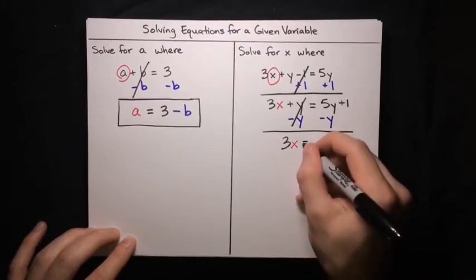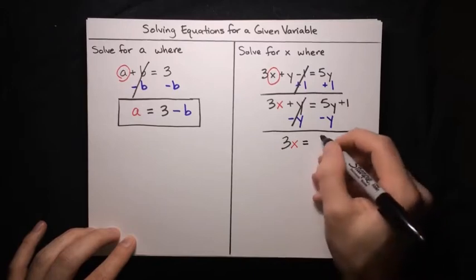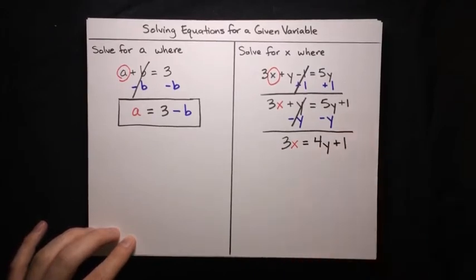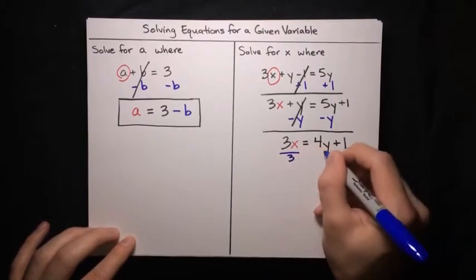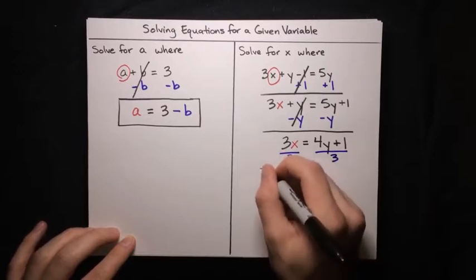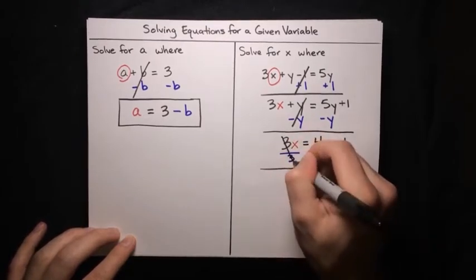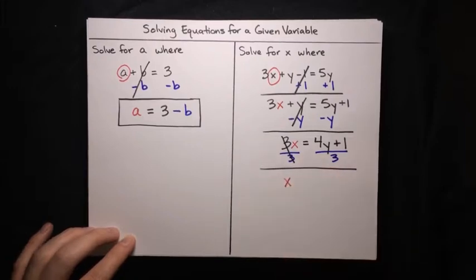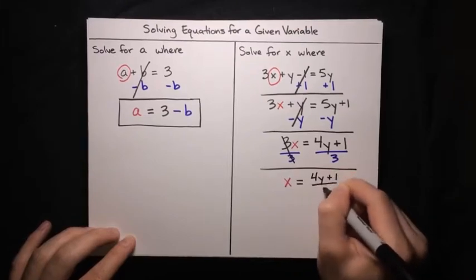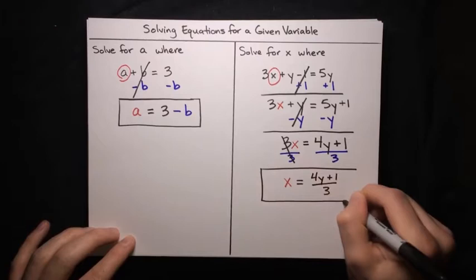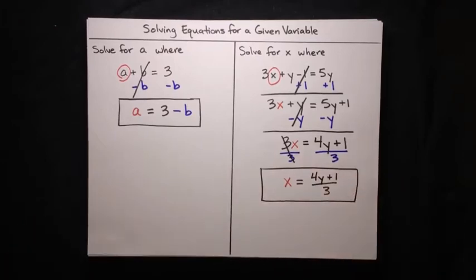On the right hand side, we've got 5y minus y, which is 4y, and then plus 1. Now let's focus on getting this 3 off of the x. The 3 is multiplying the x, so we can use the multiplication principle, which says in order to cancel out a multiplication, we do a division. So divide both sides by 3. The 3 divided by 3 cancels, and we've just got x on the left. We can leave the right hand side as 4y plus 1 over 3. So there we go, we've solved for x — x equals 4y plus 1 over 3.